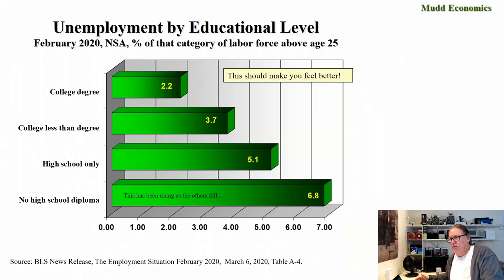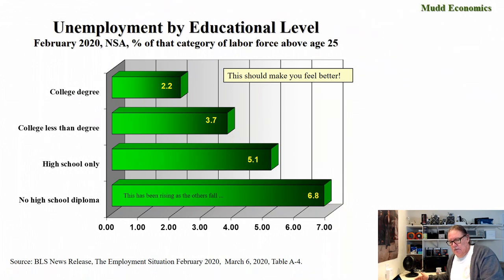As I say here, this should make you feel better. Although the average unemployment rate was about 3.5%, those with a college degree had an unemployment rate of only 2.2%. College with less than a degree — going to college for a couple years without finishing — was 3.7%, just a little above average. High school only was 5.1%, and no high school diploma at all was 6.8%. It's interesting that the no-high-school-diploma number has been rising as the others have been falling as the overall unemployment rate came down. So your college degree cohort had a very low unemployment rate, at least in February 2020.